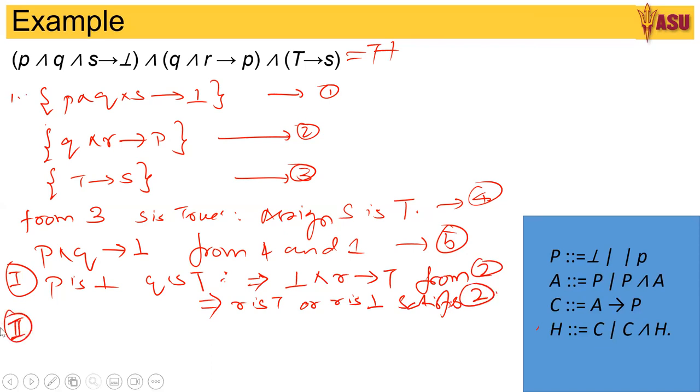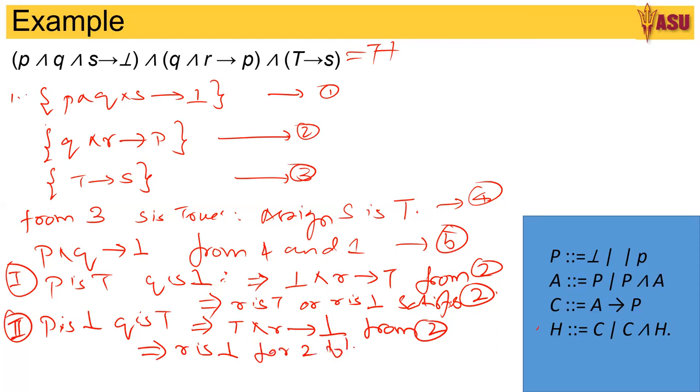Second option is, P is true and Q is false. Sorry, in the first case, it is P is true and Q is false. So let me take the second case, where P is false and Q is true. So this implies, truth and R goes to false from 2. So false, I'm representing it as bottom. This is from 2. This implies, R is bottom for 2 to be true.